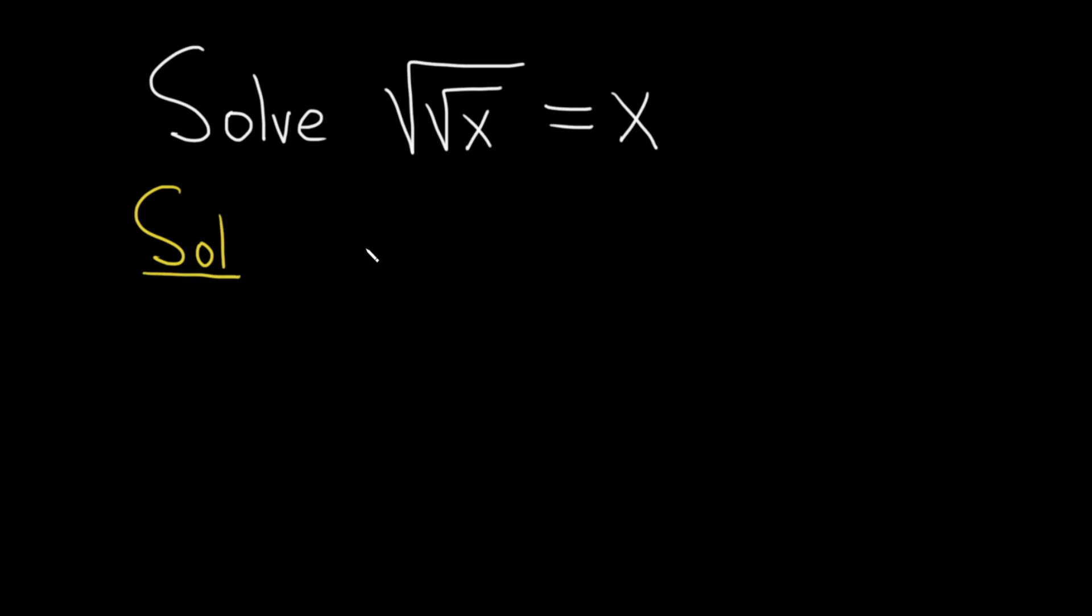Solution. So in order to do this we need to get rid of the square roots. I'm going to go ahead and write down the original equation one more time. So the square root of the square root of x and that's equal to x. And then to get rid of the square root all we have to do is square both sides. So let's do that.